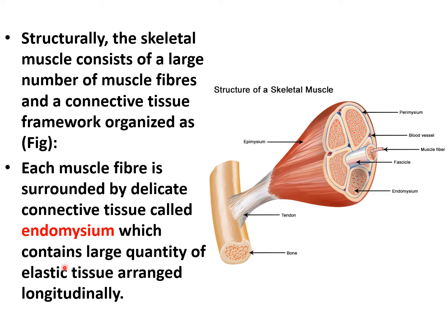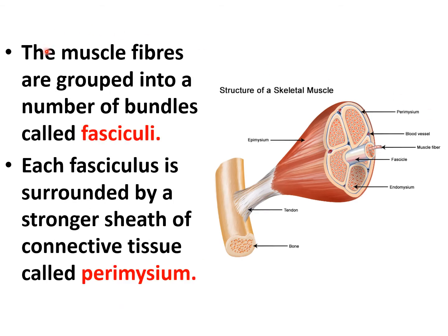The endomysium contains a large quantity of elastic tissue arranged longitudinally. The muscle fibers are grouped into bundles called fasciculi, and each fasciculus is surrounded by a stronger sheath of connective tissue known as perimysium.